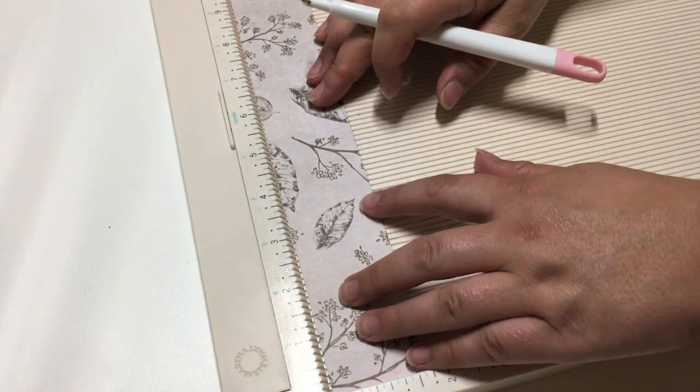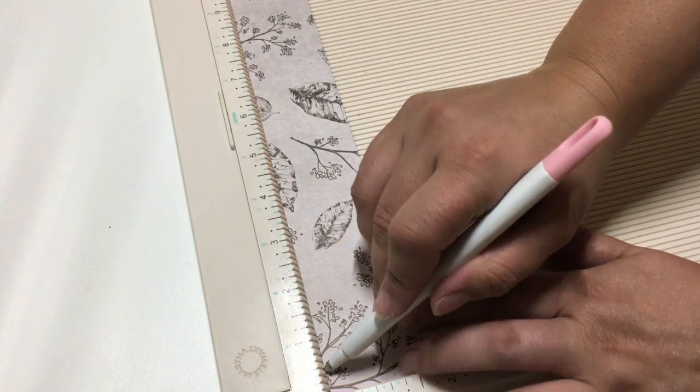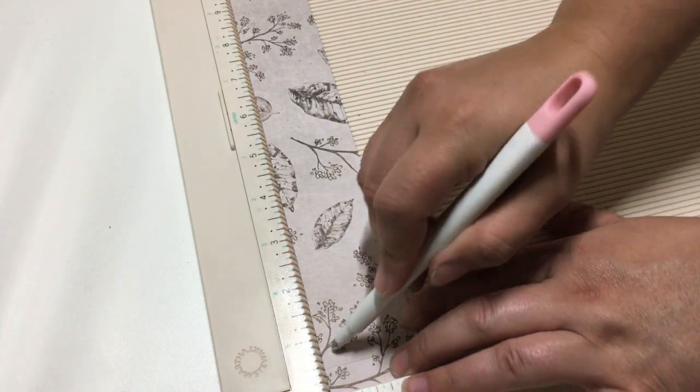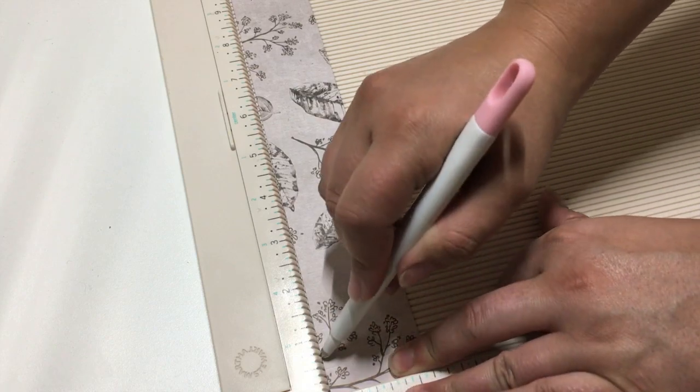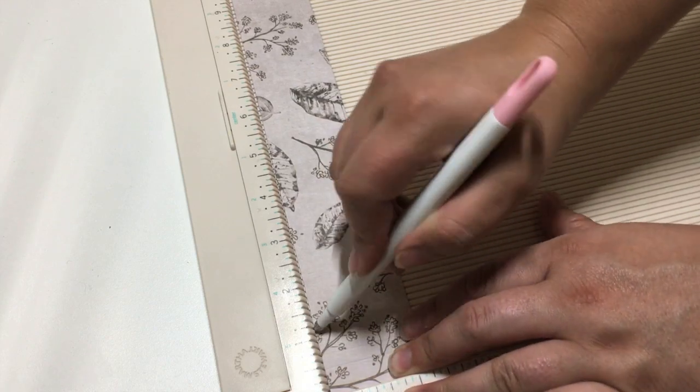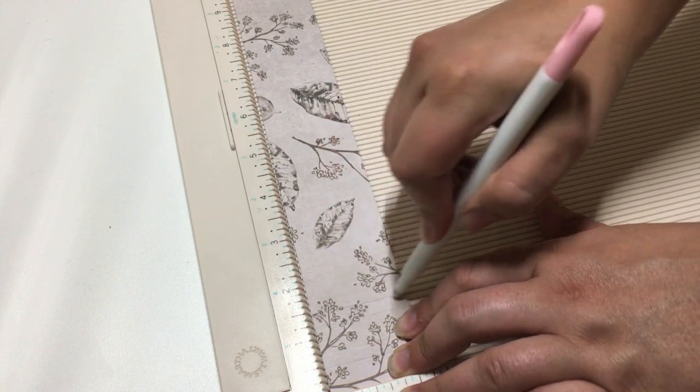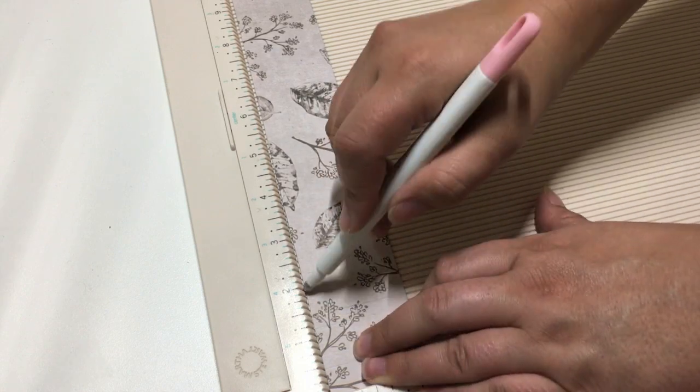The next pleat I'm going to show you is the basic pleat. You're going to start by scoring at the half inch mark and then go over a quarter inch from that and again a half inch, quarter inch, half inch, just going back and forth between those markings all the way down the paper.